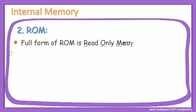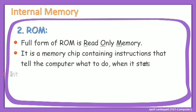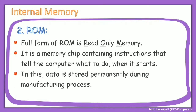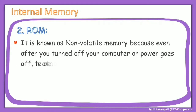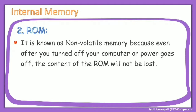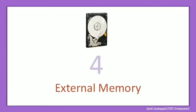Now let's see the second type: ROM. The full form of ROM is Read Only Memory — R for Read, O for Only, M for Memory. It is a memory chip containing instructions that tell the computer what to do when it starts. Data is stored permanently during the manufacturing process, so this is permanent memory. It is known as non-volatile memory because even after you turn off your computer, the content of the ROM will not be lost — just like we remember our name and our parents' names throughout life.